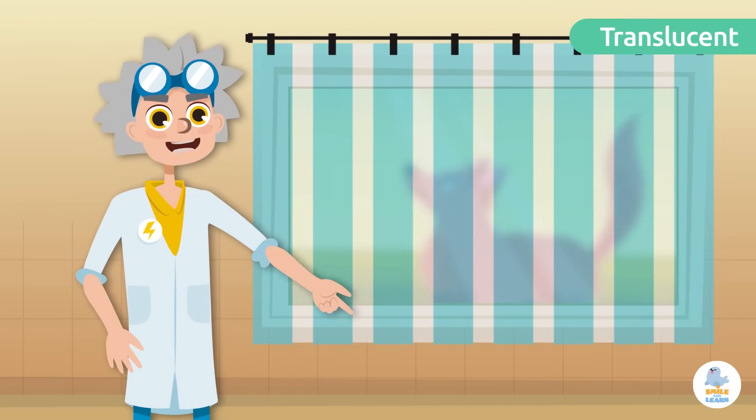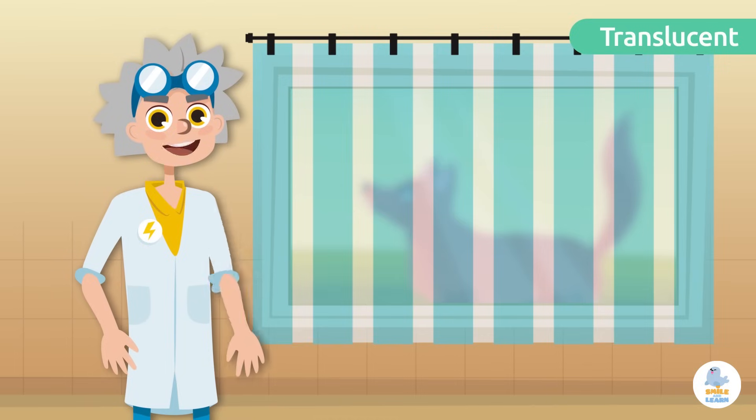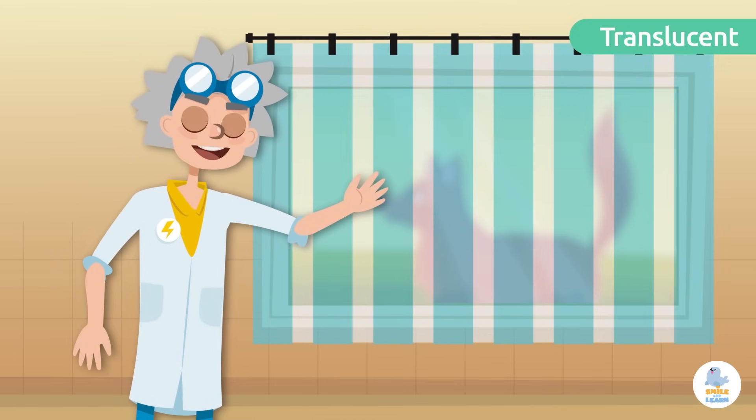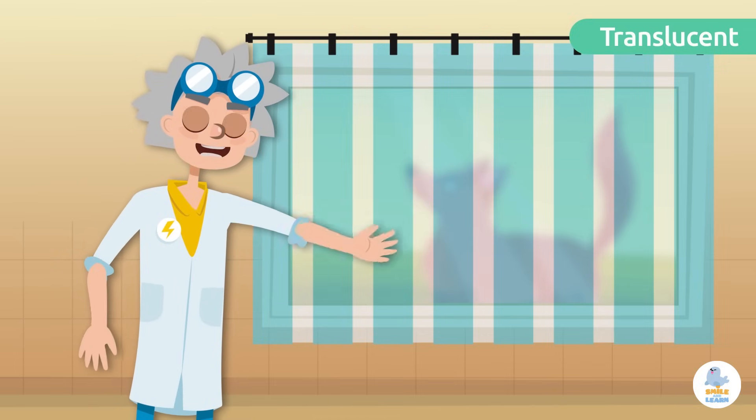Translucent materials are those that partially allow light to pass through, preventing us from seeing clearly what is behind them. For example, curtains.